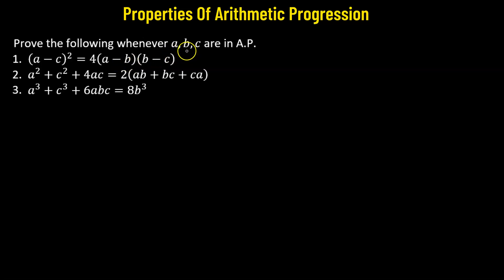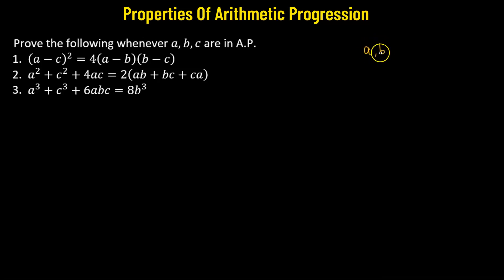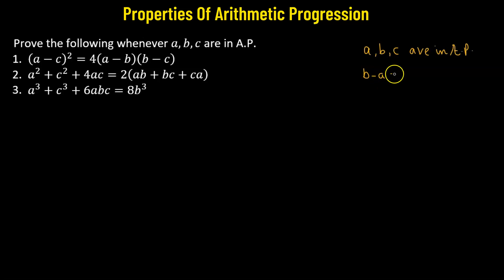In this problem, we have three numbers a, b, and c, and they are in arithmetic progression. We need to prove each of the following. So let's begin with the first condition. We are given that a, b, c are in arithmetic progression, which means that when we subtract the first term from the second term, this value must be equal to the third term minus the second term.